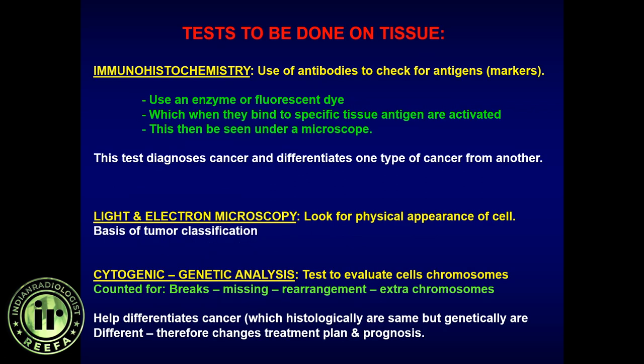For WHO classification, the first step is histology via light or electron microscopy. The second step is immunohistochemistry, cytogenetic, and genetic analysis. We add nomenclature such as IDH mutant or non-mutant, TERT, RELA status, p53 status, MGMT status, and 1p/19q co-deletion — these are derived from genetic analysis and immunohistochemistry of brain tissue.